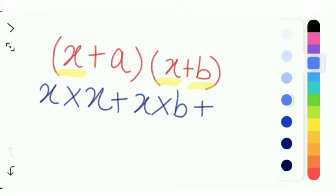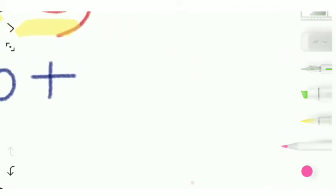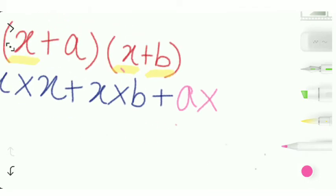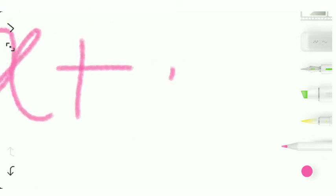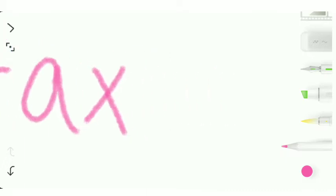I'll take a different color, pink maybe. Okay, so a multiplied by the first term of the second bracket, which is x, plus a multiplied by the second term of the second bracket, which is b.